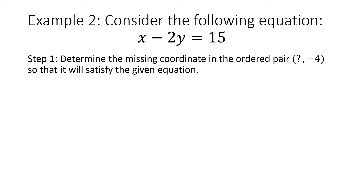Example 2: consider the following equation, x minus 2y equals 15. Step 1: determine the missing coordinate in the ordered pair, question mark comma negative 4, so that it will satisfy the given equation. The first thing we need to do is determine what variable that negative 4 is, and that would be our y value.